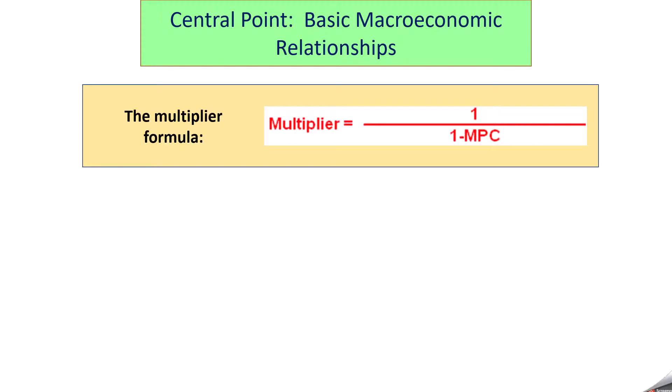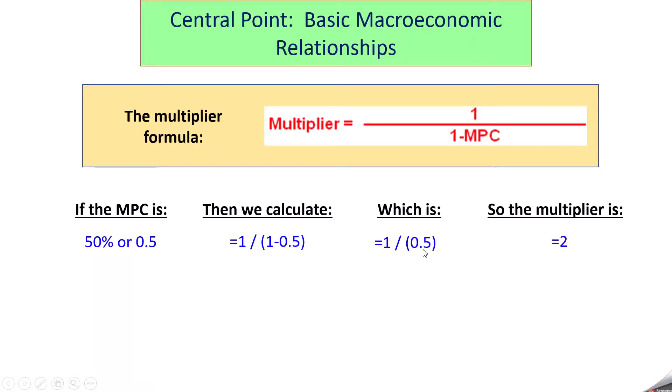So let's do some scenarios. If the MPC for a whole community, for a whole economy, is 50% or .5, then we calculate 1 over 1 minus .5, which then equals 1 over .5. When we simplify the denominator, which equals 2. .5 goes into 1 twice. So that $100 in this economy would turn into $200 in economic activity if the MPC was 50%.